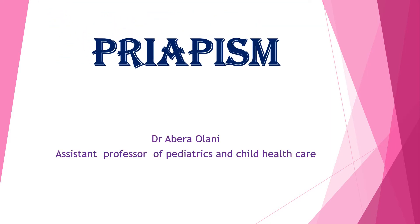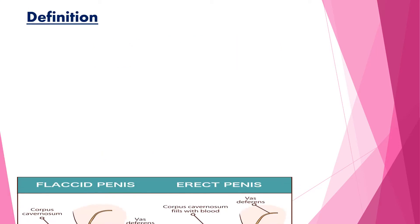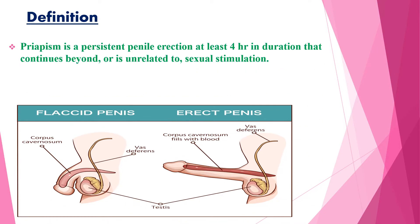Welcome back everyone. Today's lesson is about Priapism. Starting from the definition, Priapism is a persistent penile erection, at least 4 hours in duration, that continues beyond or is unrelated to sexual stimulation. Typically, only the corpora cavernosa is affected.